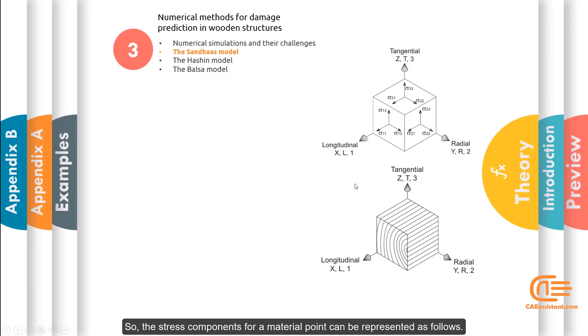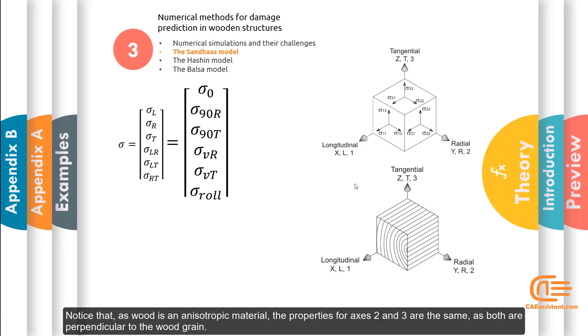So, the stress components for a material point can be represented as follows. Notice that, as wood is an anisotropic material, the properties for axes 2 and 3 are the same, as both are perpendicular to the wood grain.